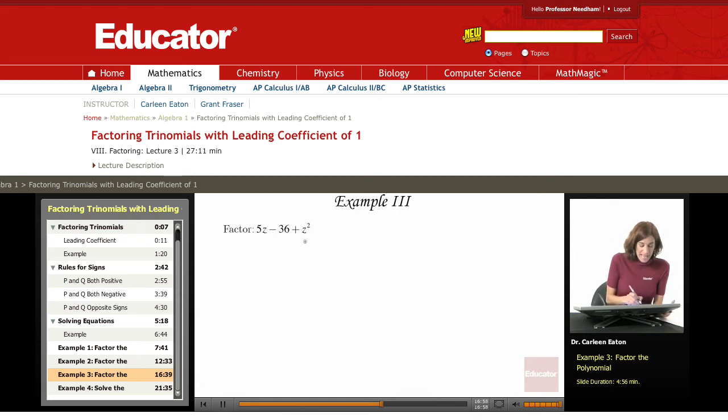So I'm looking at this, and I just need to switch around some of the terms. Standard form would be x squared plus bx plus c. So I want my squared variable first, then 5z minus 36.